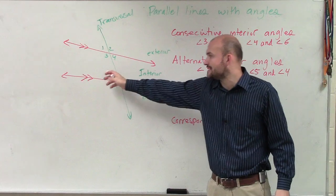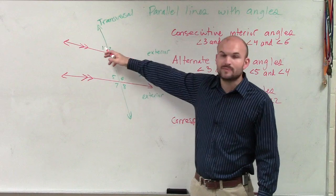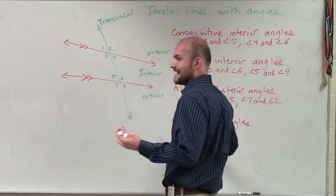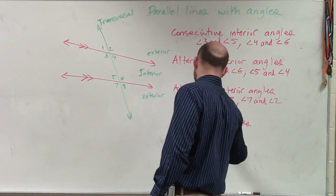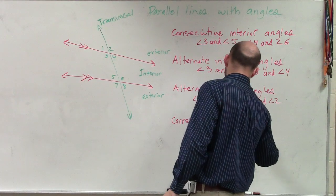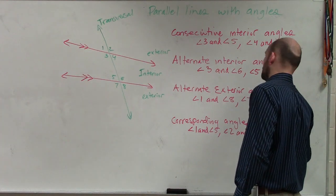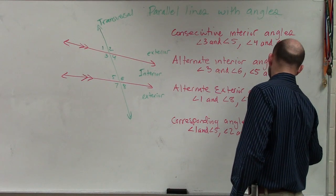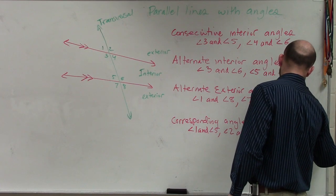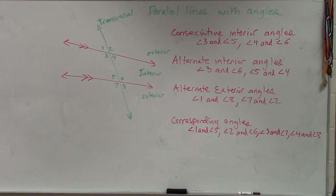You can see that in this intersection, angle 5 is kind of in the upper left-hand corner. The corresponding angle to that would be angle 1. So corresponding angles are in the same position. We have angle 1 and angle 5, angle 2 and angle 6, angle 3 and angle 7, and angle 4 and angle 8. So that was your example of corresponding angles.